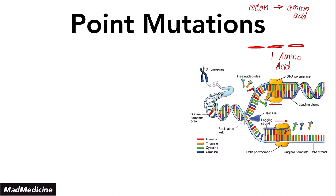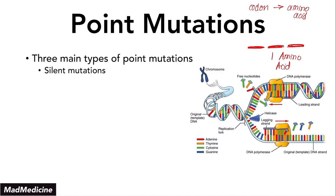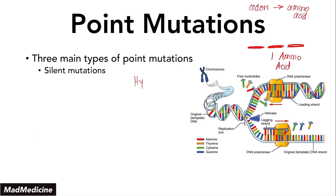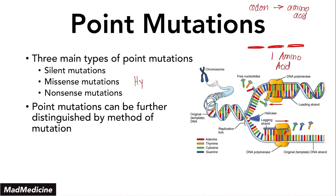You have three main types of point mutations: silent mutations, missense mutations, and nonsense mutations. These are all very high yield and concepts you need to know well. Point mutations can be further distinguished by the method of mutation itself — how is the mutation happening? Those two methods are transition or transversion. We're going to discuss all five concepts in detail, so stay tuned.